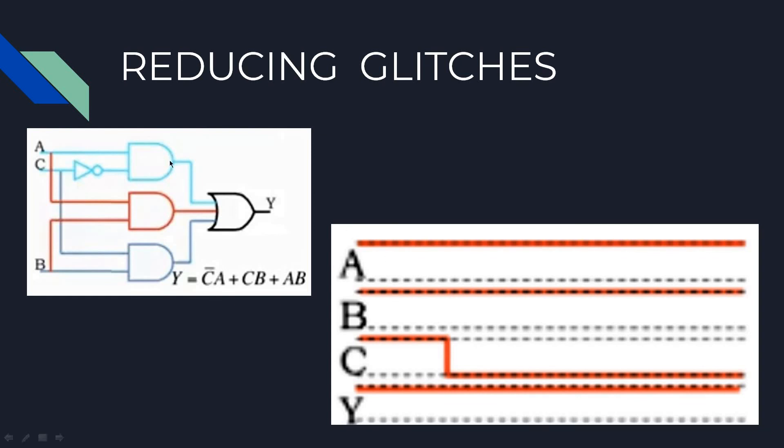So if at all there is a propagation delay here also, this AND gate will manage everything. So the 1 to 0 transition on the C input doesn't cause a glitch on the Y output. So this is how we reduce or remove glitches from the output waveforms using K-maps. Thank you.